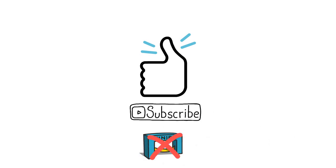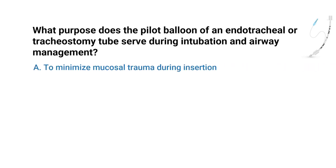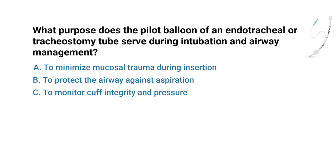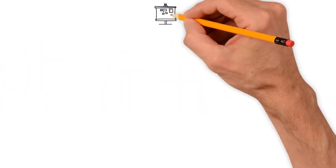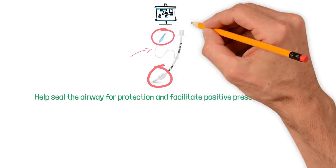Let's break down another practice question. What purpose does the pilot balloon of an endotracheal or tracheostomy tube serve during intubation and airway management? A) to minimize mucosal trauma during insertion, B) to protect the airway against aspiration, C) to monitor cuff integrity and pressure, or D) to help with proper tube positioning. Do you know the answer? Let's break it down.